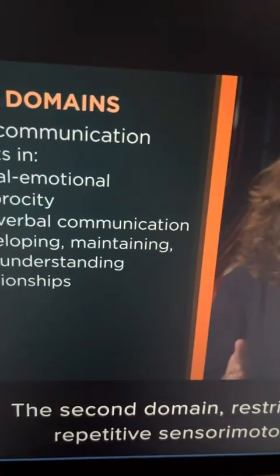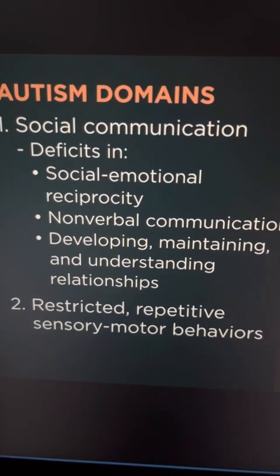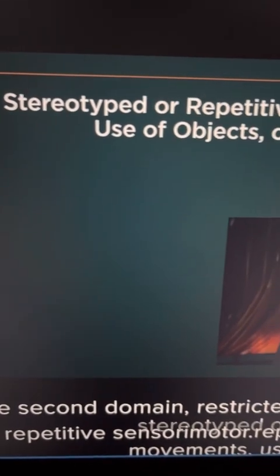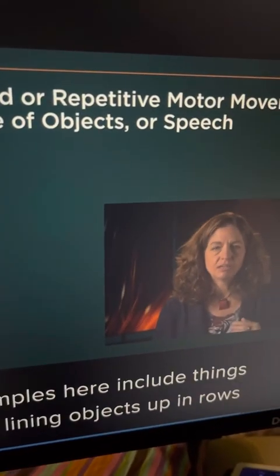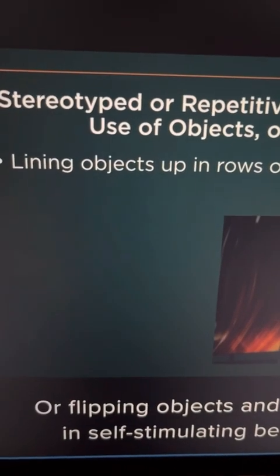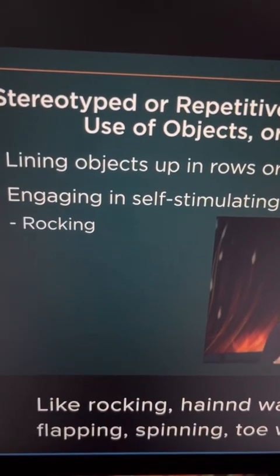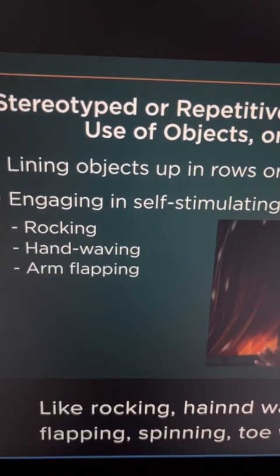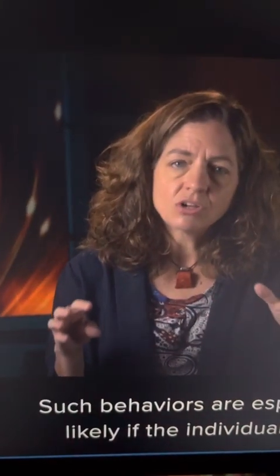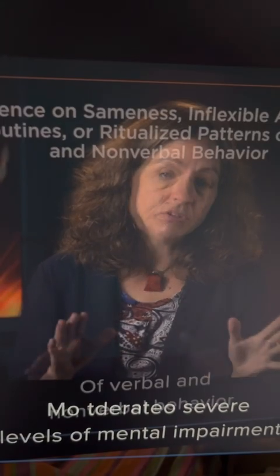The second domain, restrictive repetitive sensory motor behaviors, has four subdomains. The first is stereotyped or repetitive motor movements and use of objects or speech. Examples include lining objects up in rows or flipping objects, and engaging in self-stimulating behaviors like rocking, hand-waving, arm-flapping, spinning, toe-walking, and head-banging. Such behaviors are especially likely if the individual has moderate to severe levels of mental impairment.